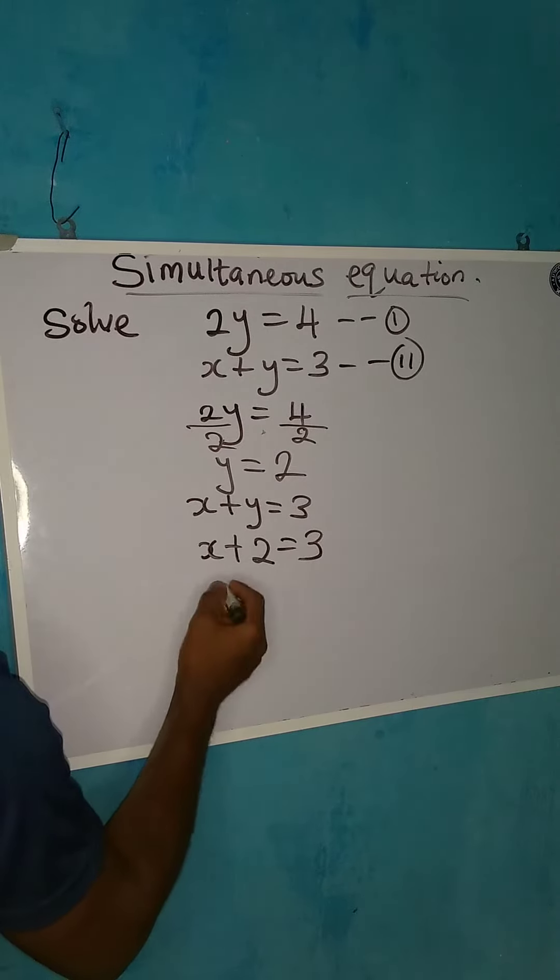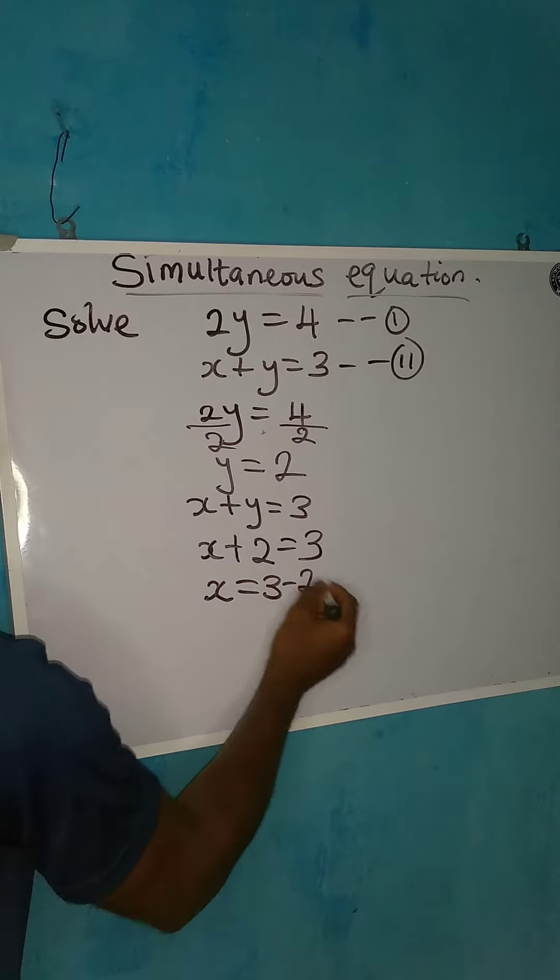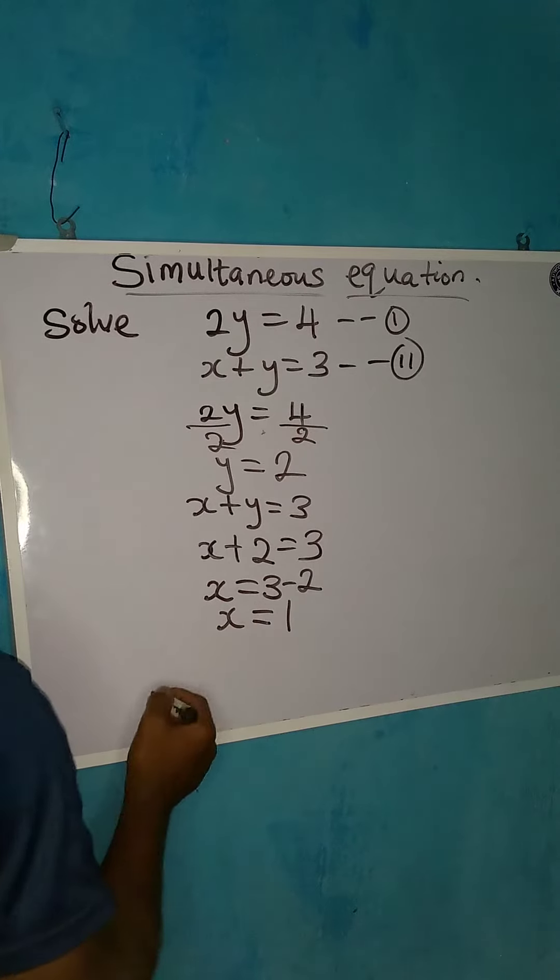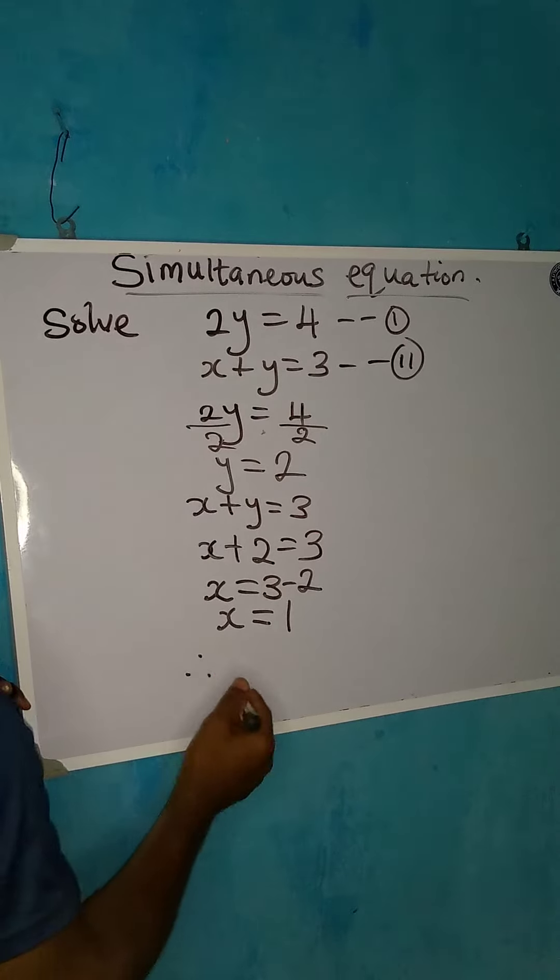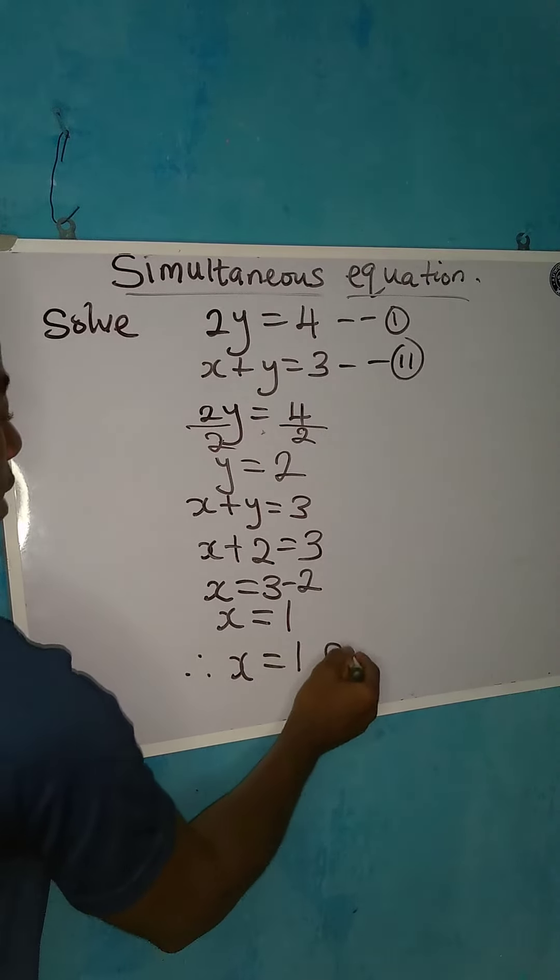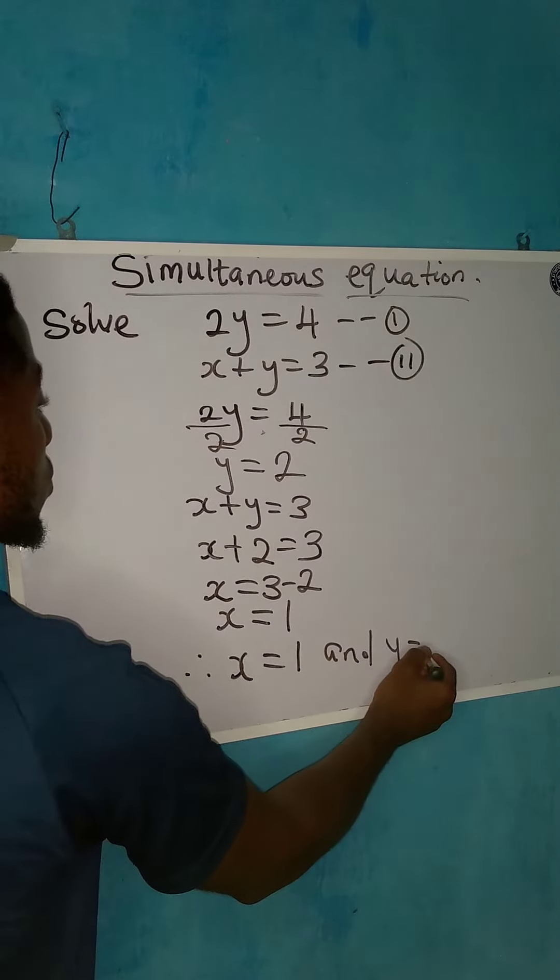Making x the subject, we are going to have x equal to 3 minus 2, and then x is equal to 1. So therefore, from the equations there, we have that x is equal to 1, and then y is equal to 2.